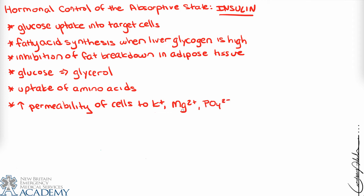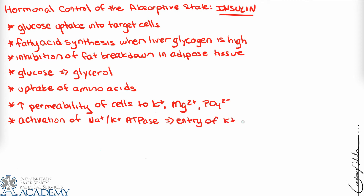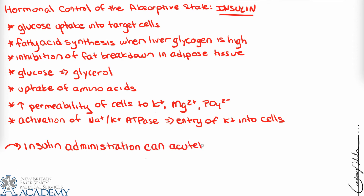Insulin increases the permeability of many cells to potassium, magnesium, and phosphate ions, and activates the sodium-potassium pump, causing potassium entry into cells. This is clinically relevant: in hyperkalemia, where there's excess potassium in the blood, insulin administration is part of the treatment cascade. It acutely suppresses plasma potassium by increasing cell membrane permeability and driving potassium into cells.